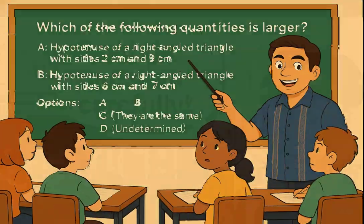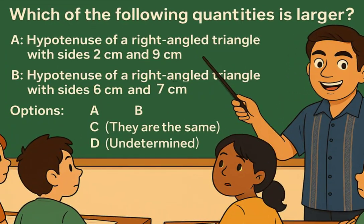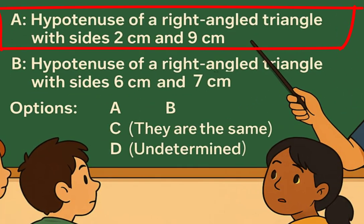Here's the question. Which of the following quantities is larger? Option A: the hypotenuse of a right-angled triangle in which two of the sides are two centimeters and nine centimeters.